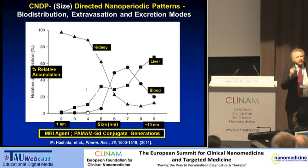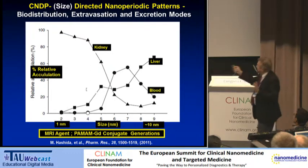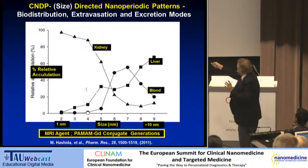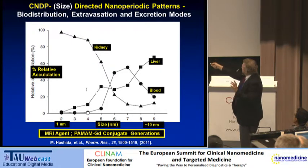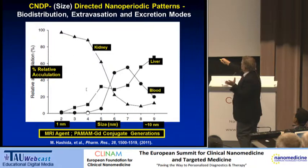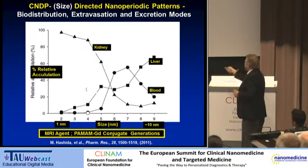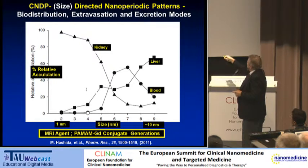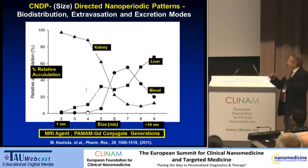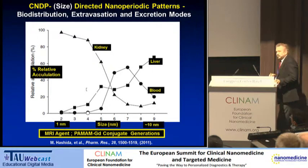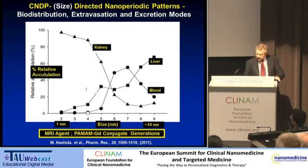Just to give you an idea of what happens when you change parameters such as size: you can very nicely manipulate whether or not this nanoparticle will be extravasated, whether it will remain in the bloodstream or leave it, or you can engineer it to go to the liver preferably as a function of size, as opposed to the kidney. Those were all parameters we were able to engineer into this new dendrimer prototype.